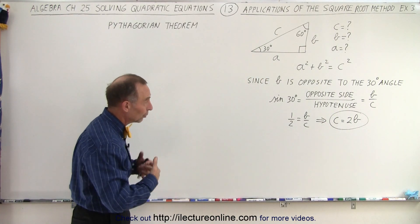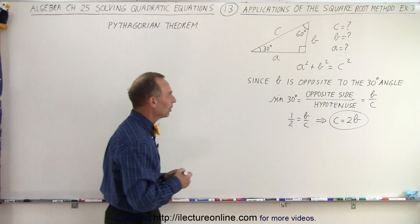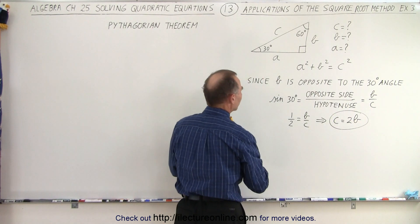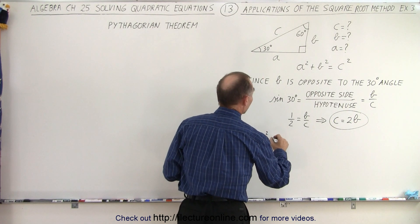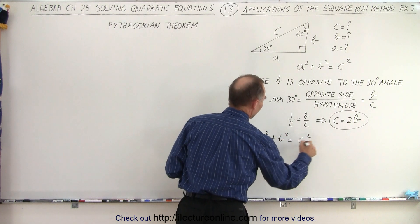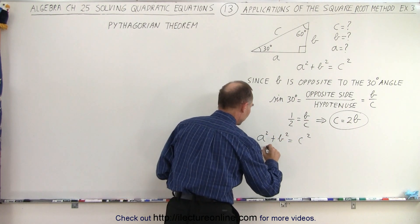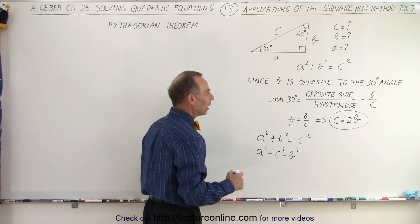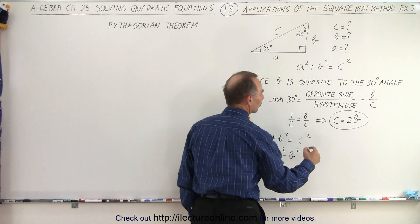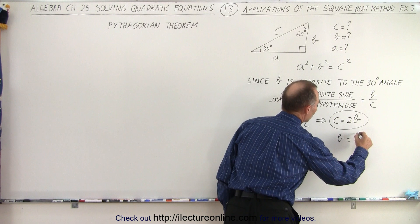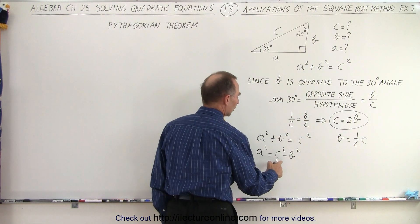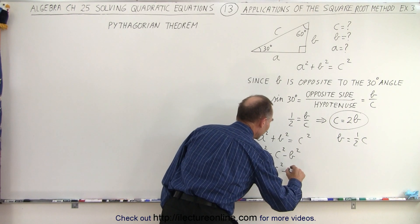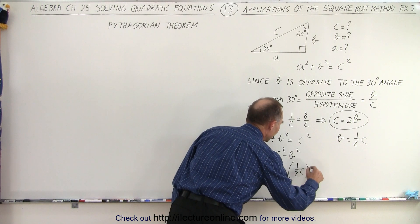Since we don't know what a, b, and c are equal to, we just have to do it in terms of the other variables. Let's start with a squared plus b squared equals c squared, and then move b squared to the other side. So we have a squared is equal to c squared minus b squared. I know what b is equal to in terms of c: b is equal to one-half c, so I can replace b with that.